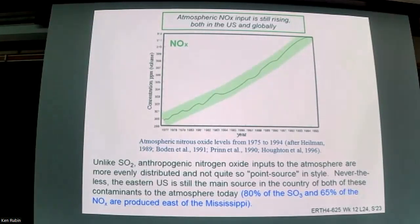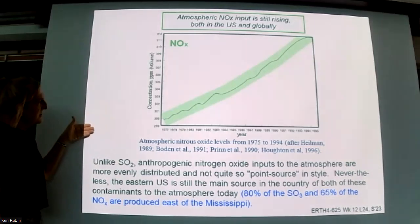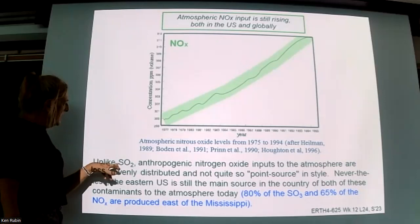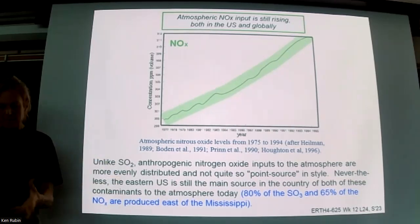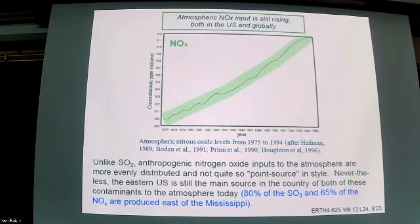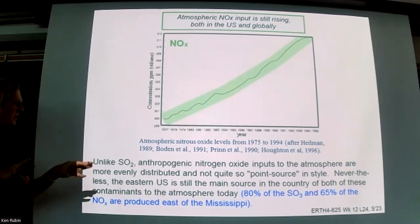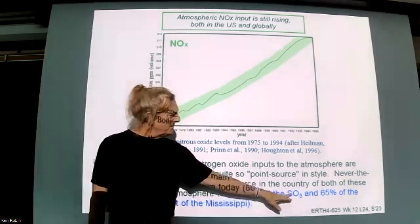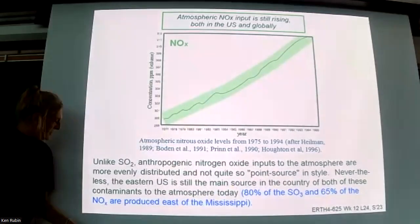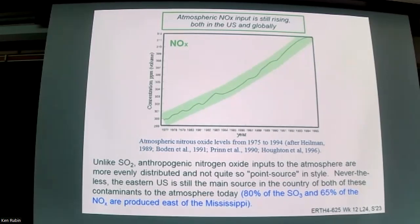This plot of nitrogen oxide around the world from 1975 to 1994 shows concentrations going up very substantially. Unlike SO2 from power plants, which is more point-source and industrial, nitrogen oxides come from everyone with a non-electric car. So while people associate pollution with western cities like Denver and LA, it turns out that 80% of sulfur oxides and 65% of nitrogen oxides produced in the US are east of the Mississippi — the eastern seaboard is really the main atmospheric contaminant.